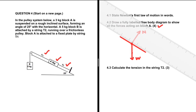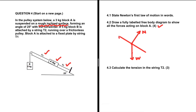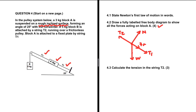What about frictional force? Block A is suspended on a rough inclined surface, so we do have a frictional force — let's not forget that. So we have T2, T1, and we also need the frictional force, Fr. I don't think we are missing anything.